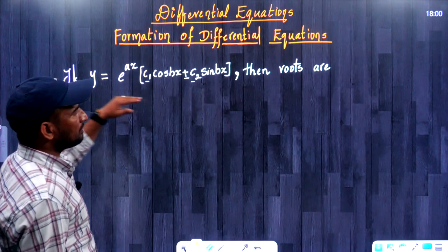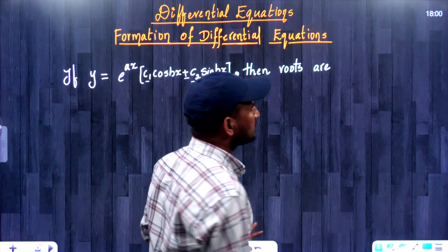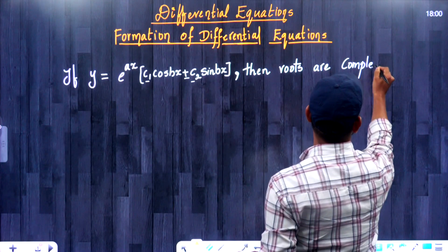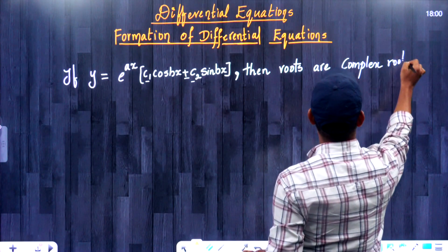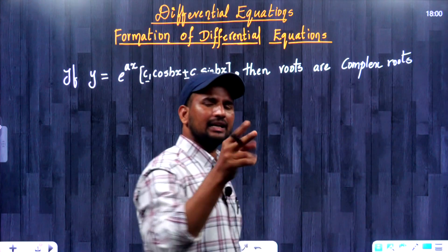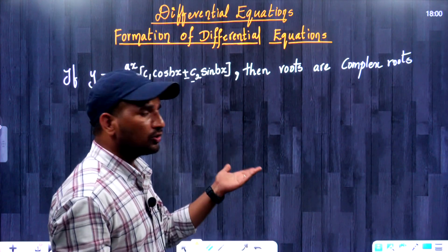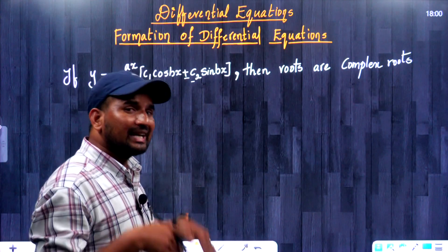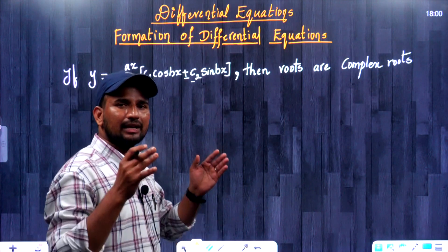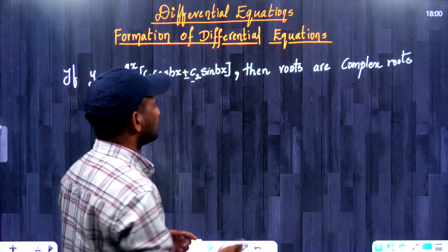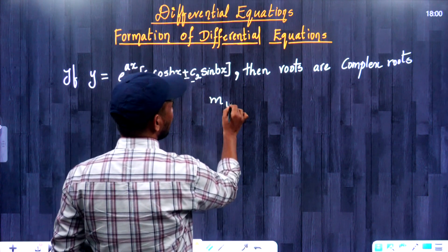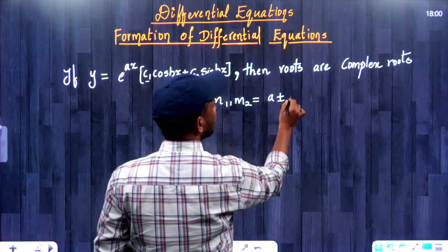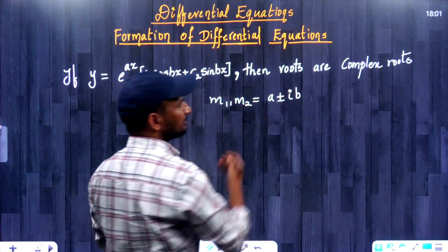When you have this form, the roots are going to be complex roots — not distinct real or equal. The roots are going to be complex. Let us decode how these are going to be complex roots. The m1 and m2 values are nothing but a plus or minus iota times b.